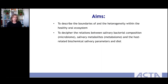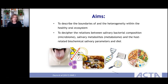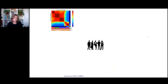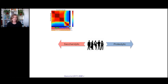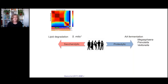We set up a study to describe the boundaries and heterogeneity of a healthy oral ecosystem, assessing relations between bacterial composition in saliva, metabolites in saliva, related biochemical salivary parameters, and the diet of individuals. We looked at almost 300 healthy young individuals and collected all types of samples. Part of this data was published in the ISME journal — it's open access if you'd like to read it. What appeared — you can see a heatmap of the microbiome in the corner — is that we found several groups or ecological types of microbes, which correlated with certain metabolites and biochemical parameters of saliva.